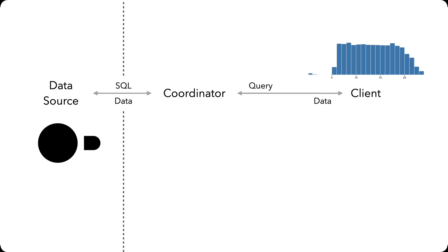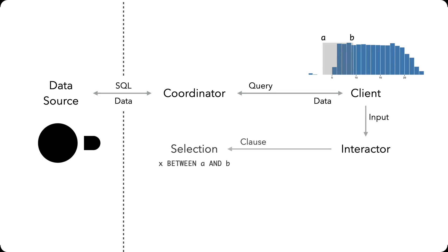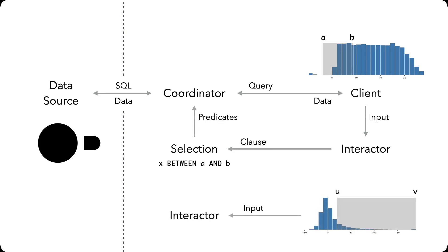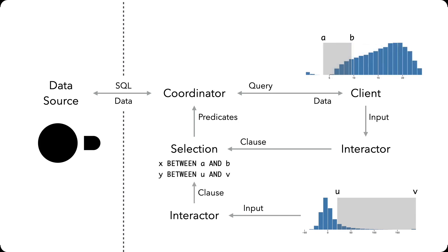Mosaic also mediates linked interactions. Updates from clients or interactors populate dynamic parameters such as selections, which manage multiple filtering predicates. Selections resolve updates across multiple clients, supporting techniques such as cross-filtered views.